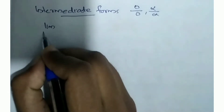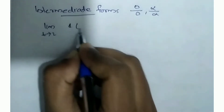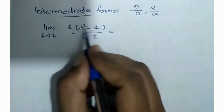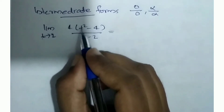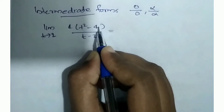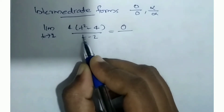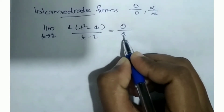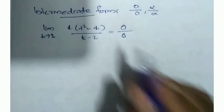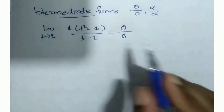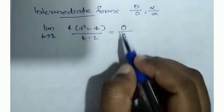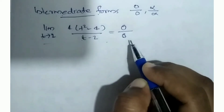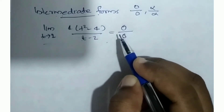Let's check this with an example: limit as t tends to 2 of (4t² - 4) divided by (t - 2). If we substitute t = 2, we get 4×4 - 4 = 0 in the numerator, and 2 - 2 = 0 in the denominator. So it is equal to 0 by 0 — that is an indeterminate form. Infinity by infinity is also an indeterminate form.